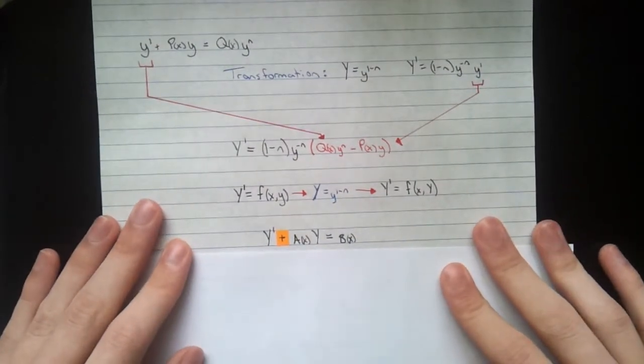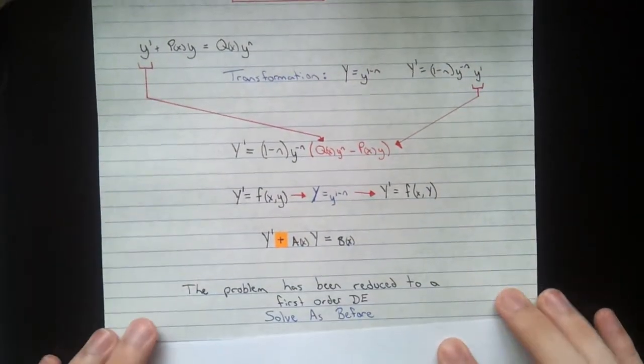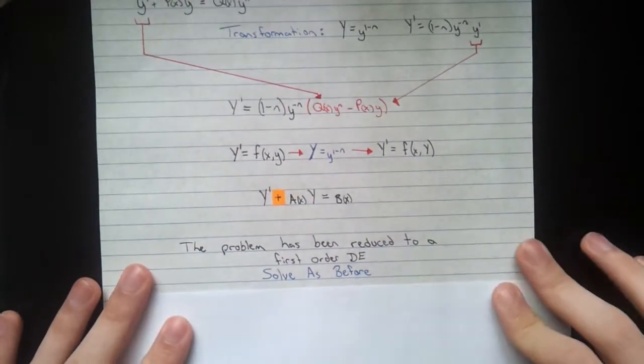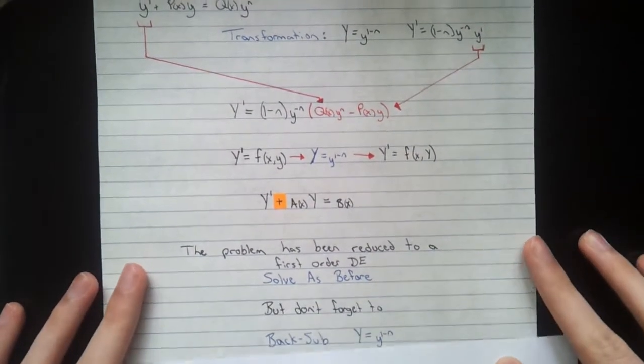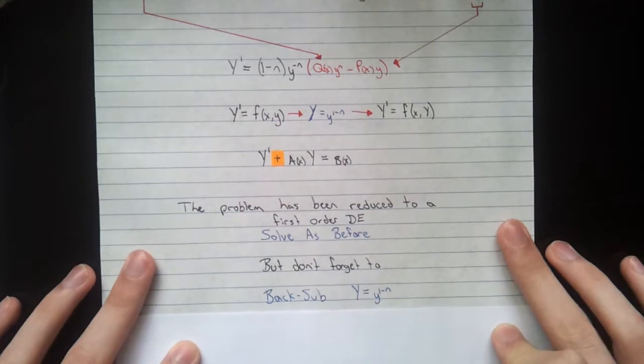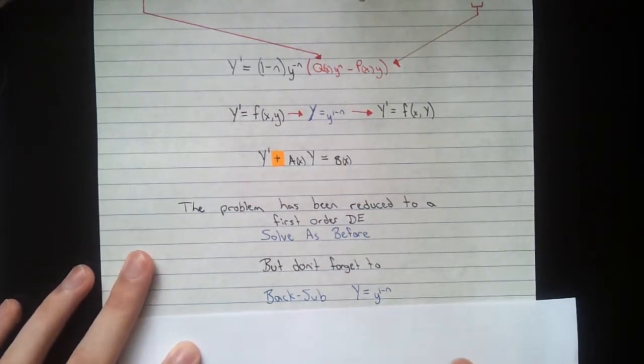And you can solve it just like you would any other first order equation. Like I said, it's been reduced. Solved as before. Again, don't forget to back sub y equals y to the 1 minus n.